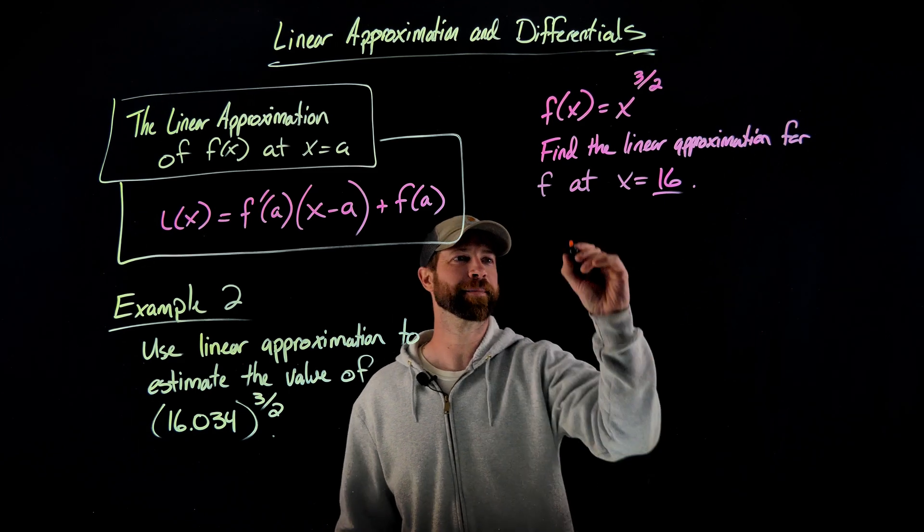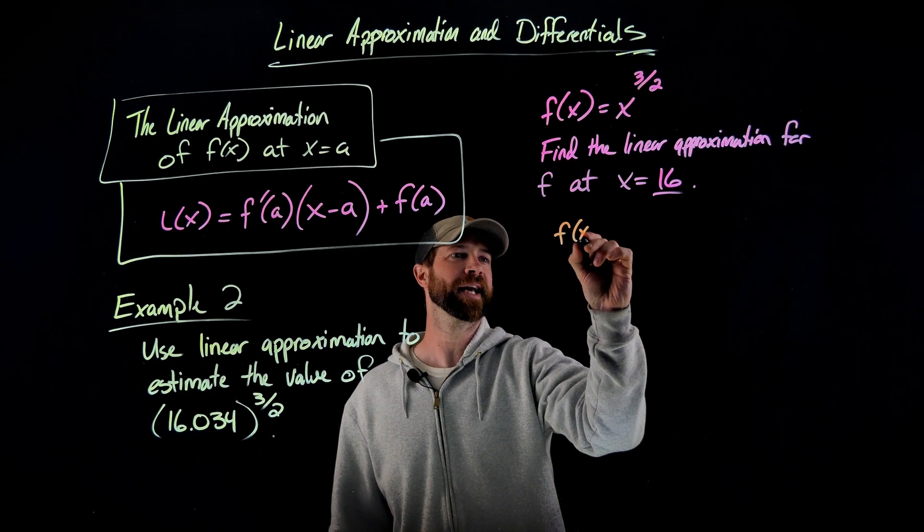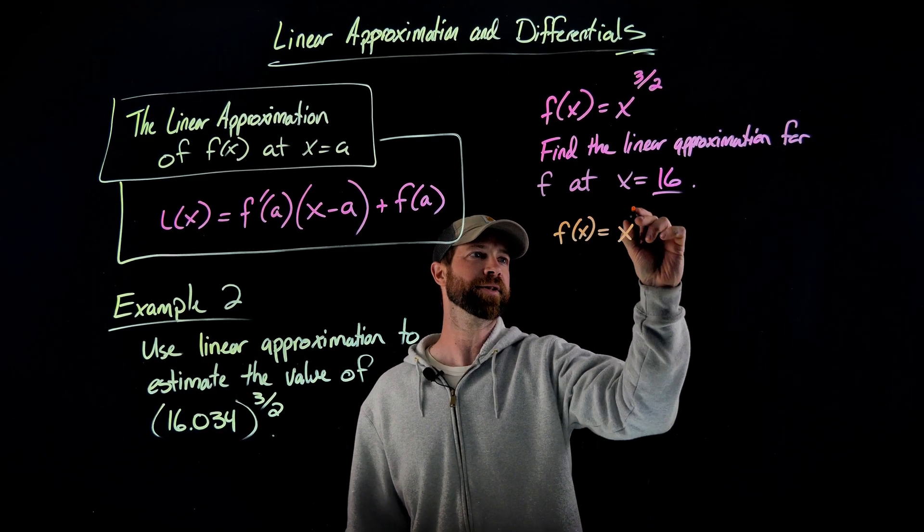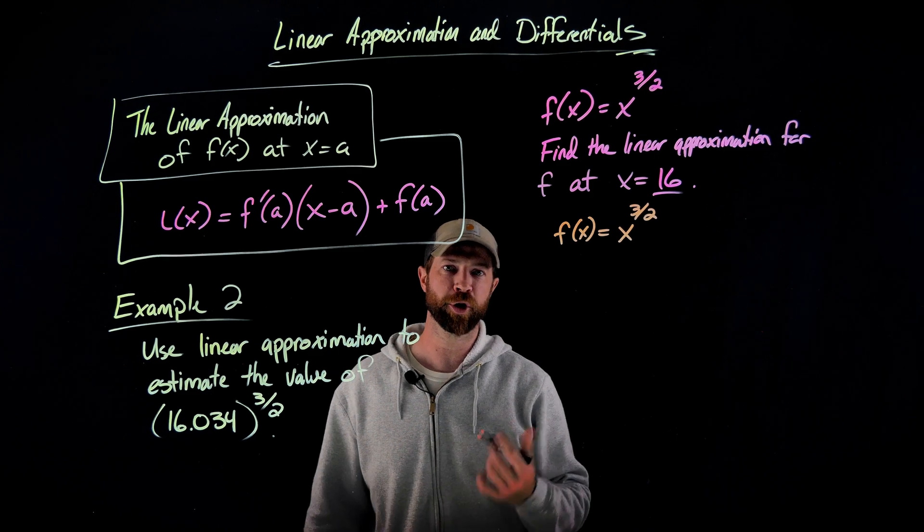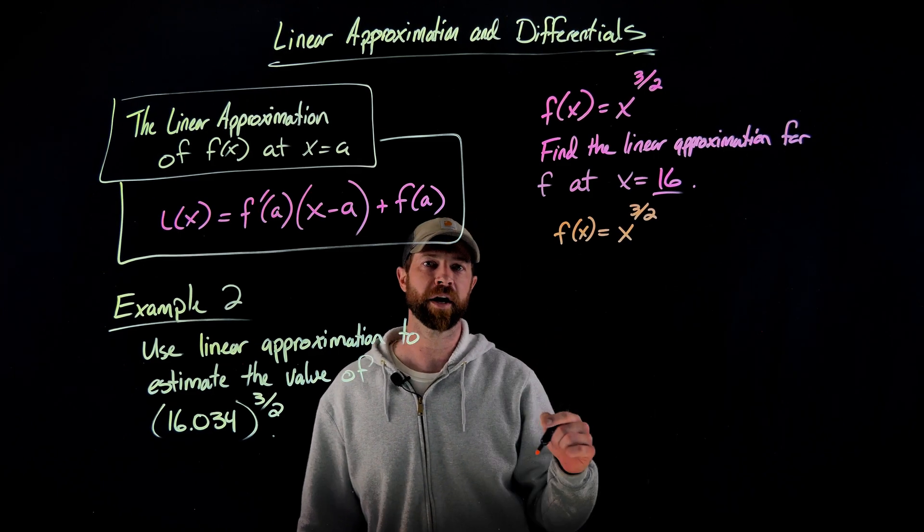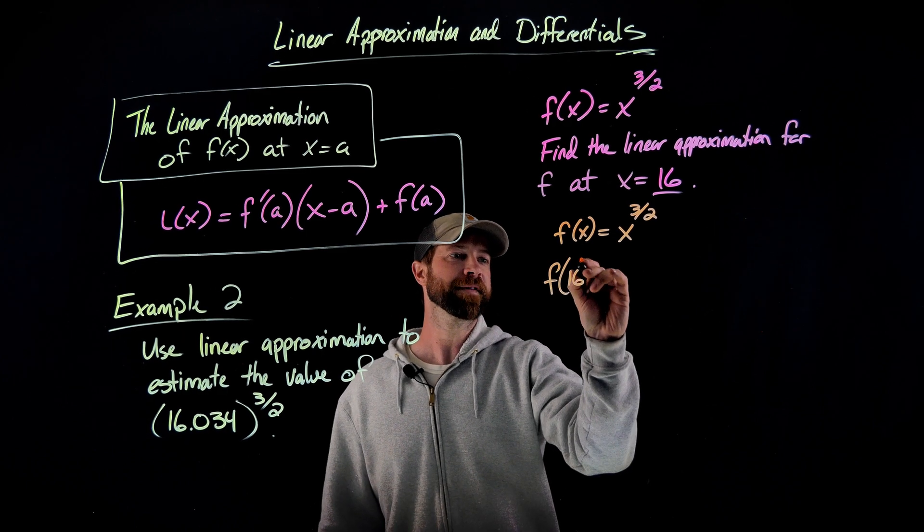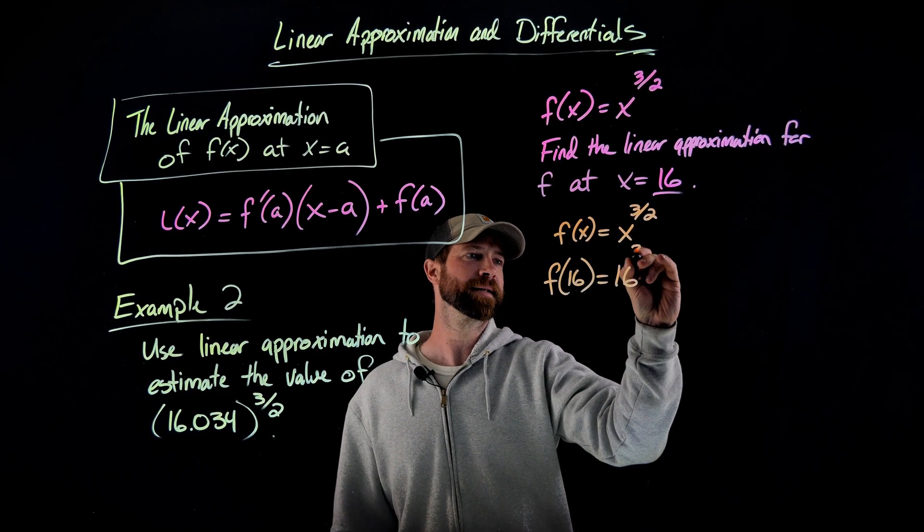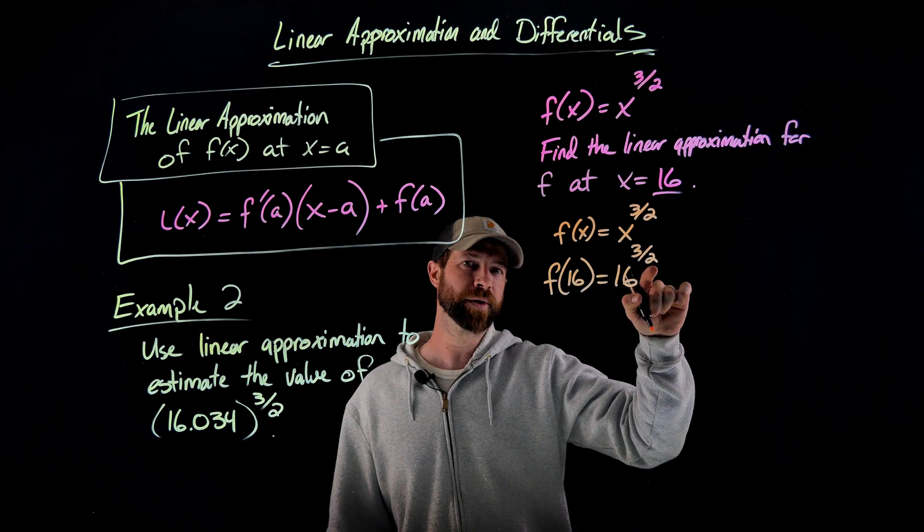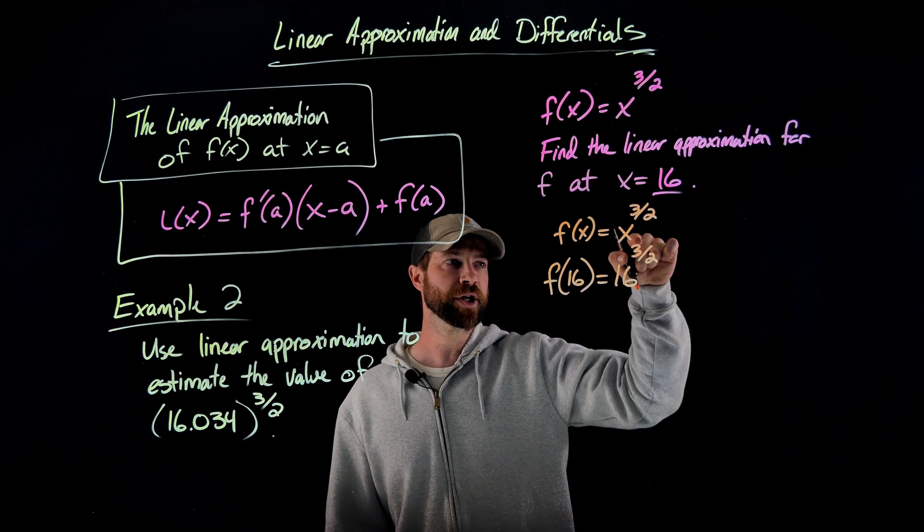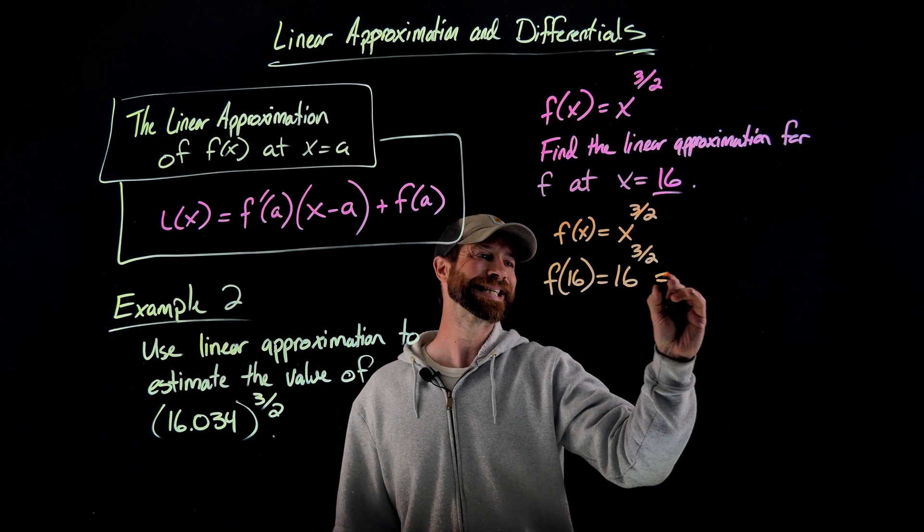All right, let's now do the work of finding linear approximations. So we're using here again, f of x equals x to the three halves. The first component we always have is just to evaluate our original function at this a value right here of 16. f of 16 equals 16 to the three halves. This is 16, take the square root to get 4, and then cube it. 4 cubed is 64.